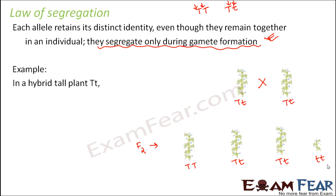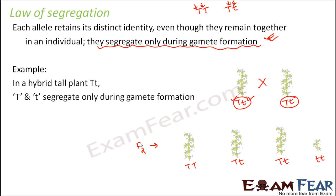Mendel explained this by saying that in a hybrid — or heterozygous — tall plant, two different alleles are present: one representing tall and one representing dwarf. They are together but retain their own identity. During gamete formation for the F2 generation, capital T and small t segregate, but after fusion they group with the other pair. So capital T always represents tall only — there is no blending between the alleles.